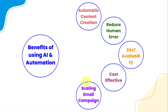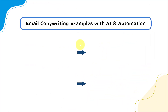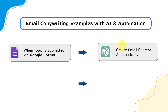You can also scale your email marketing campaigns. You can create a form and circulate it among your team members, and whenever a topic is submitted via Google Forms, the content for the email will be generated automatically using this ChatGPT application.